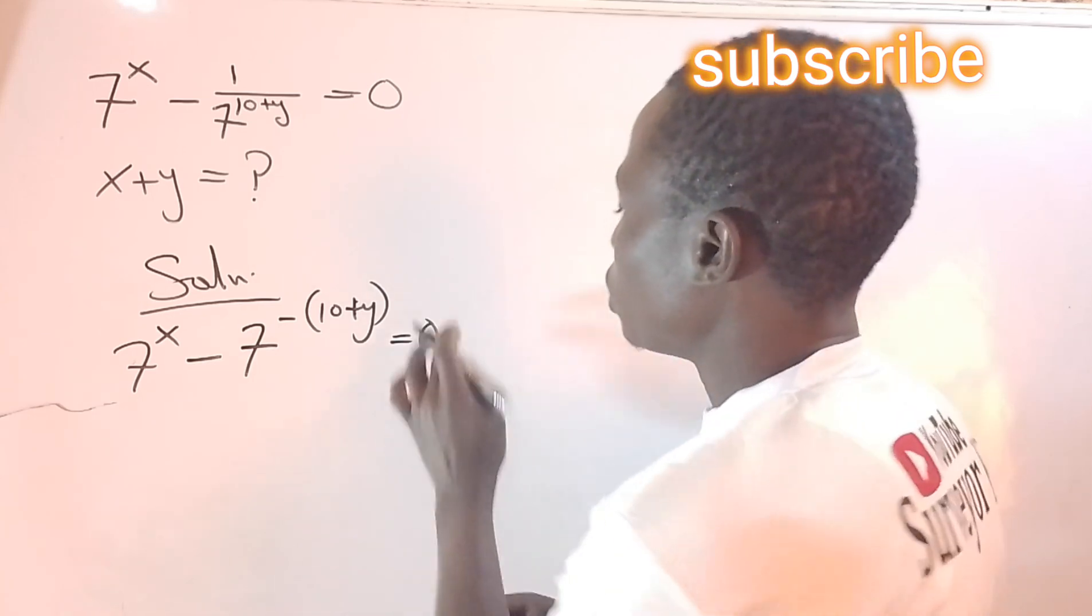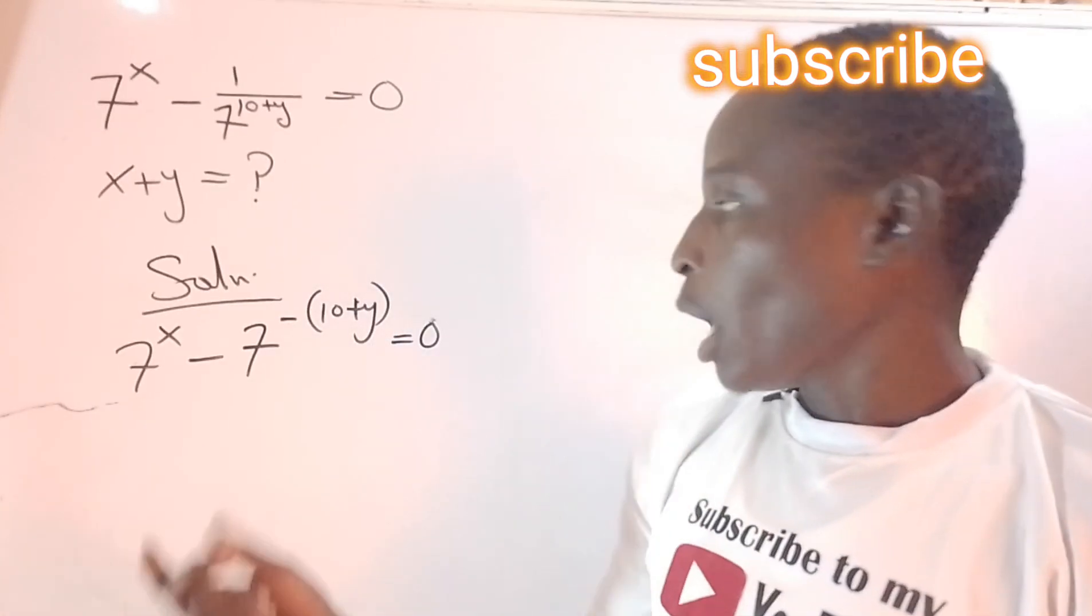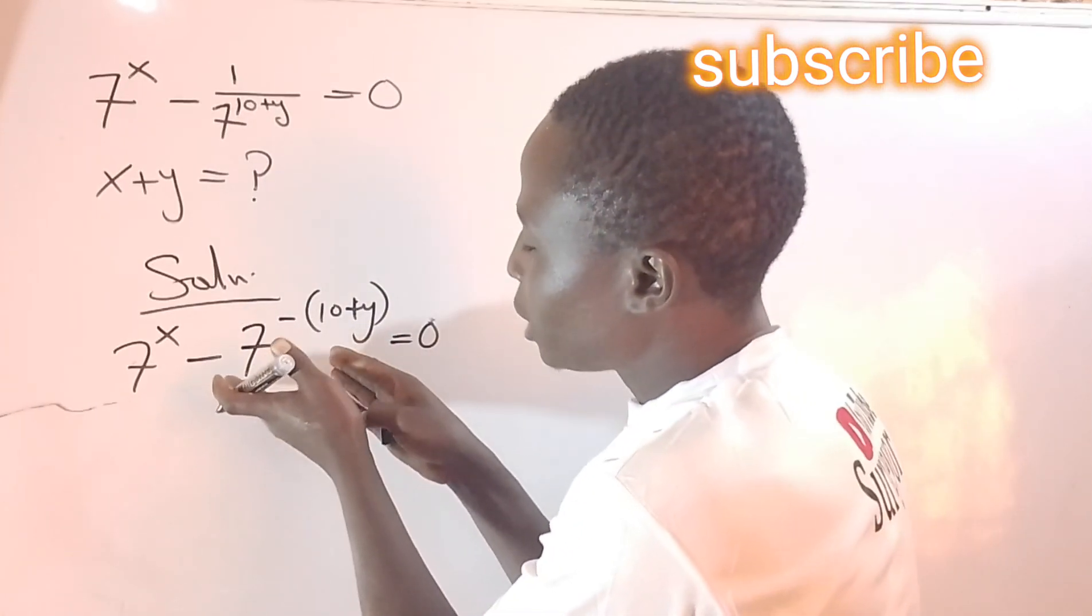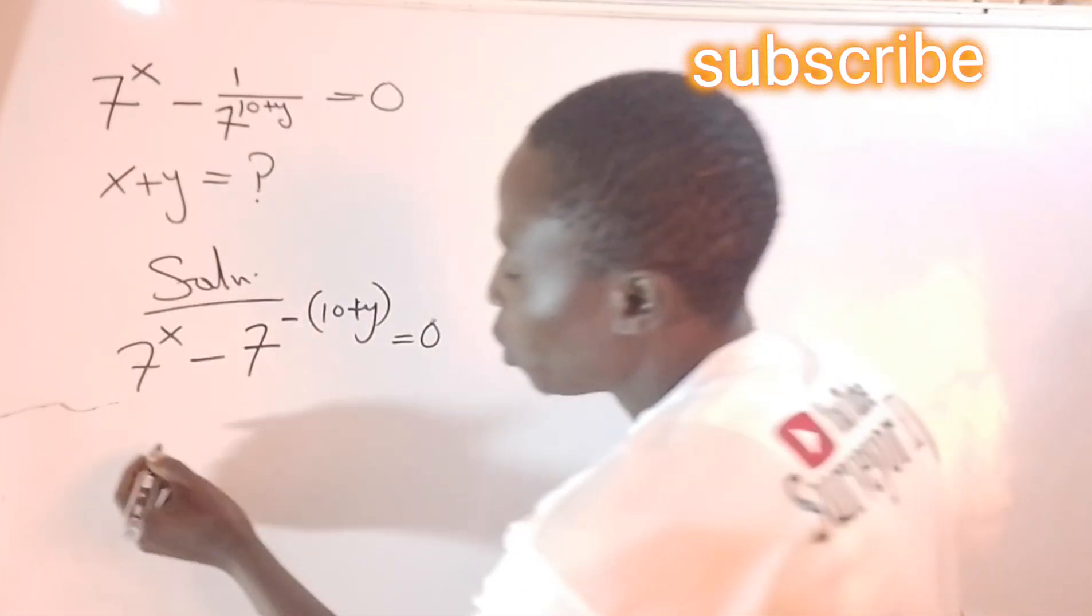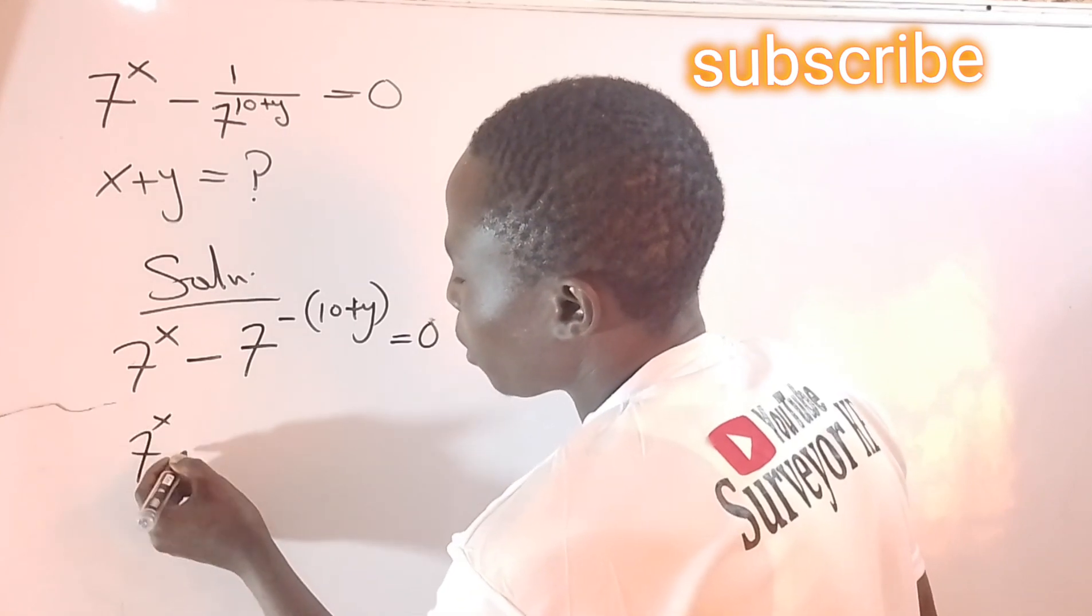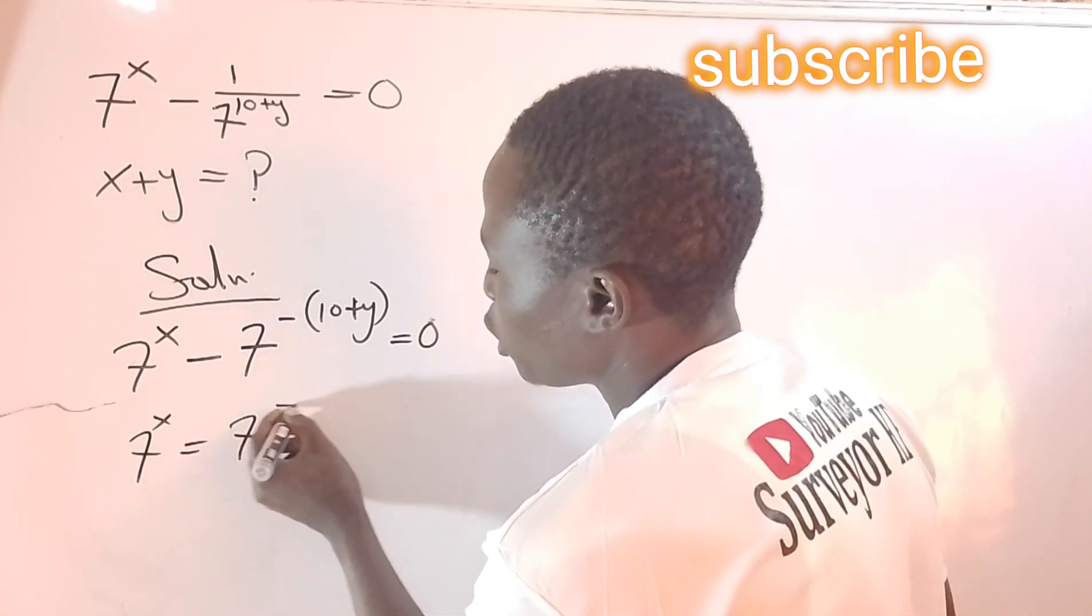So I want to transpose this negative 7^(10+y) to the other side. That means I'm going to have 7^x equals 7^-(10+y). Having the same base, I can equate the powers, so that means x equals -(10+y).